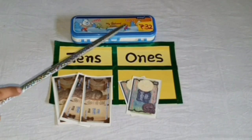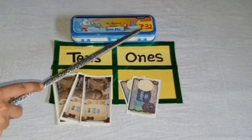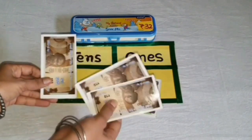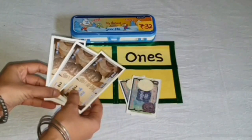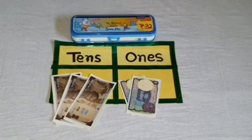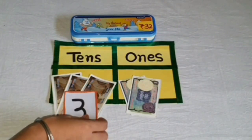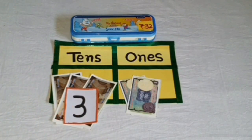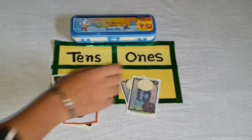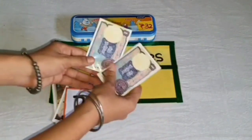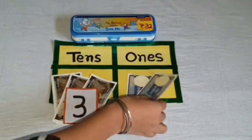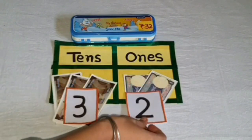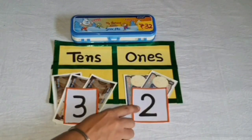Cost of geometry box is Rs.32. Let's count the money spent to purchase this item. Here is 10, 20, 30 — three notes of Rs.10, it means three tens. And one rupee notes are? One, two — two notes of Rs.1, it means two ones.